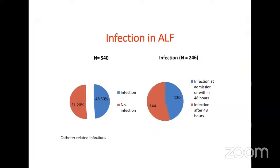Infection is critically important: patients with acute liver failure are prone to septic shock, which is one of the leading causes of death. Among bacterial infections, 50 percent of patients have pneumonia, 20 percent have UTI, and catheter-related infections also occur. When encephalopathy worsens, intubation may be needed. Strict attention to hand washing and strict asepsis when handling lines is essential.